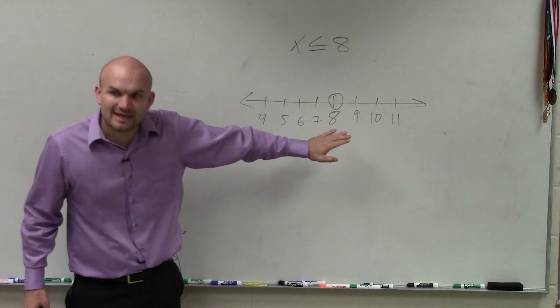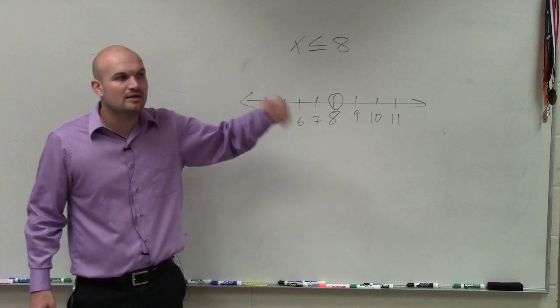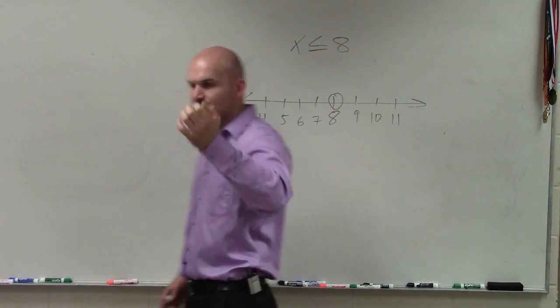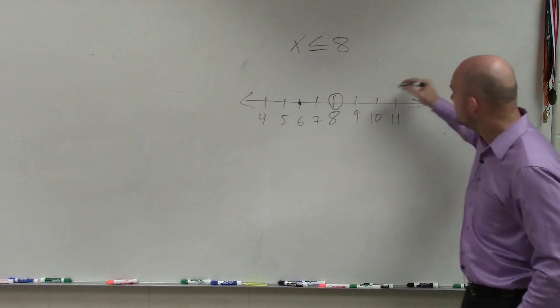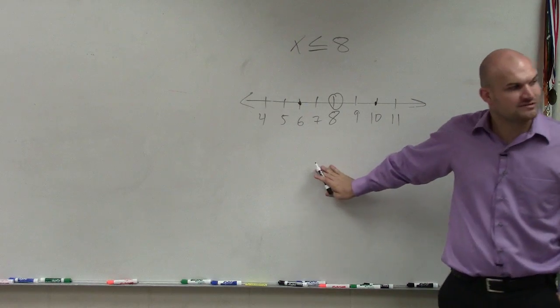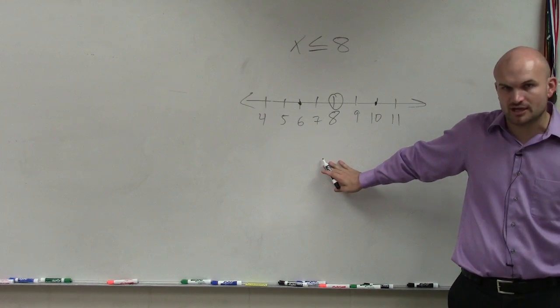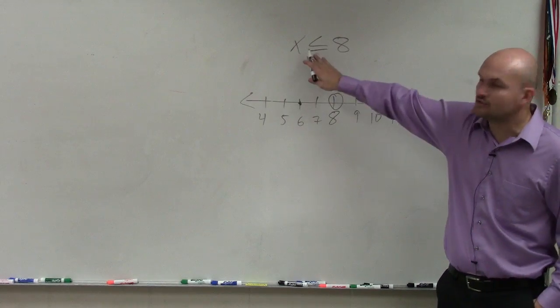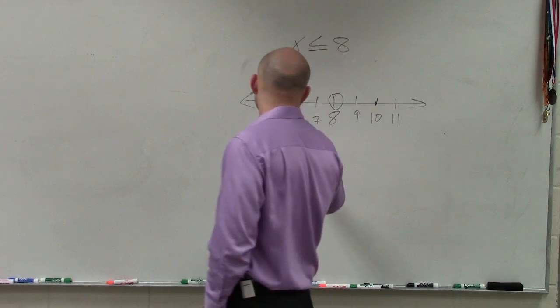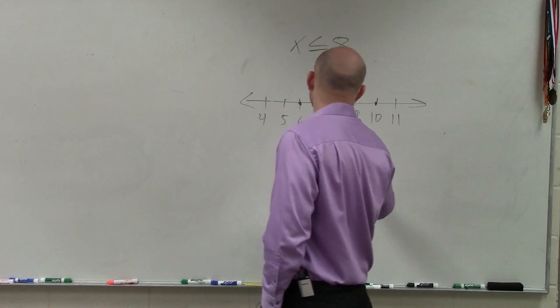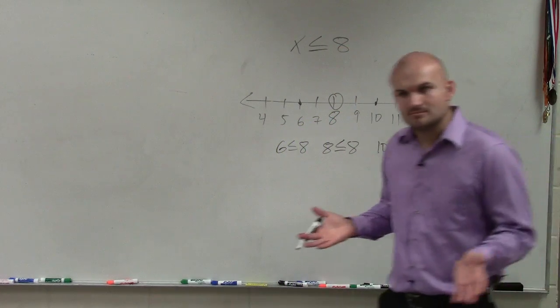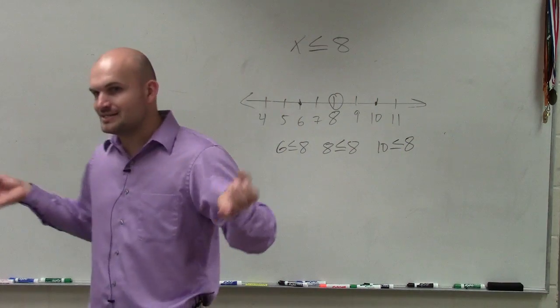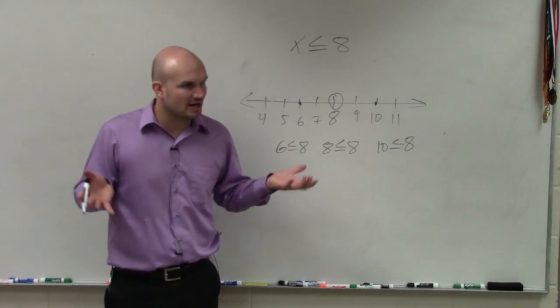So to determine if that's closed or open, we are going to create some test points. And all I simply want you to do is just pick a point to the left, pick a point to the right, and obviously choose the number that is your solution. Then plug in those values in for x. So I have 6 less than or equal to 8, 8 less than or equal to 8, and 10 less than or equal to 8. Again, this is the longer way, but guys, it is foolproof.